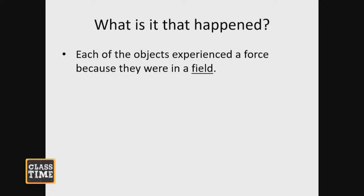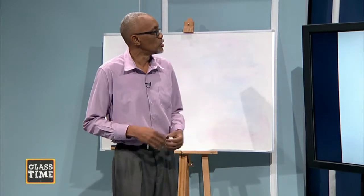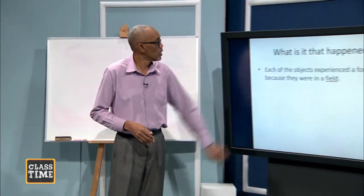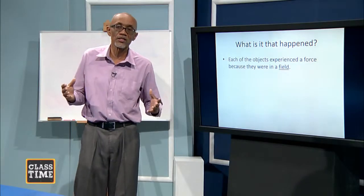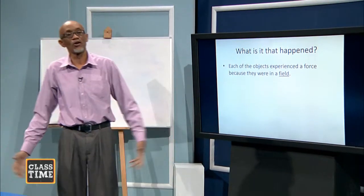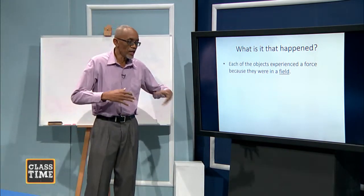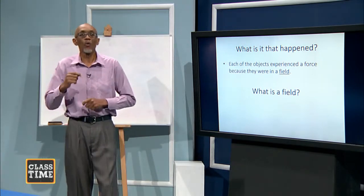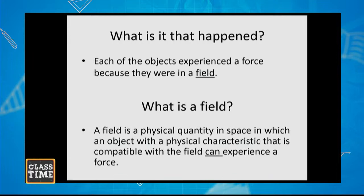You might have been introduced to these forces, and they call them action-at-a-distance forces. But we will look a little bit more into what actually happened to make these objects move and experience that force. Each of the objects experienced a force because they were in a field. A field is a physical quantity in space in which an object with a physical characteristic that is compatible with the field can experience a force.